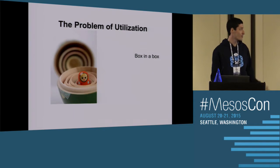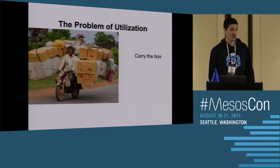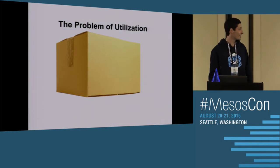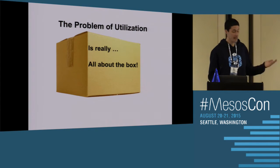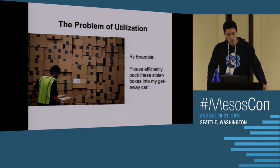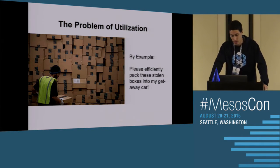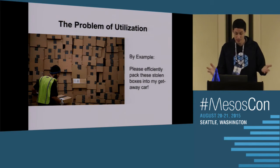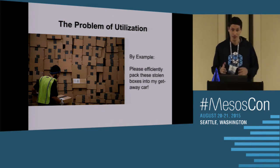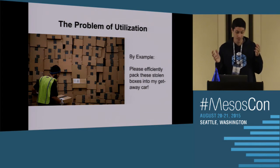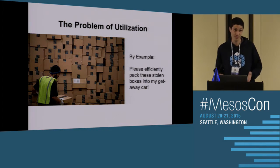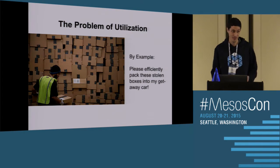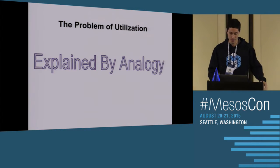You can unpack the box, put a box in a box, carry the box. At the end of the day, it's all about a box. A real-world example is: please efficiently pack all of these stolen boxes in my getaway car. UPS solves this all the time. Robbers from banks have to solve variants of this problem. This is the problem of utilization in one form or another.